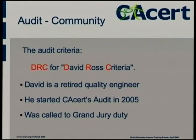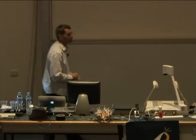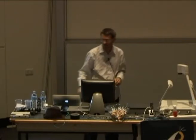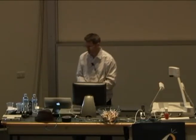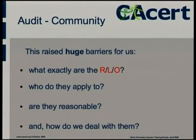How did the audit affect the community? This is where it starts to get complex in business terms. Audits work towards a criteria, and our criteria is called DRC — for David Ross criteria. He started the audit back in 2005 or so, wrote his criteria, but then got called on to other things. The criteria has a very strong feature: it requires that the risks, liabilities, and obligations for everybody is stated in some fashion or other to everyone. Now, this caused us a lot of problems. We didn't really know what that meant. What are risks, liabilities, and obligations? How they affect people with certificates? How they affect the people using the certificates? It's not entirely clear whether they can apply to us as members or to other people around the world. And how sustainable are they? Can we pay for these things?